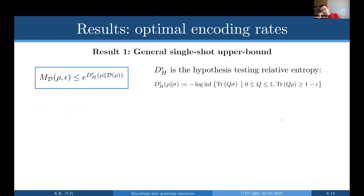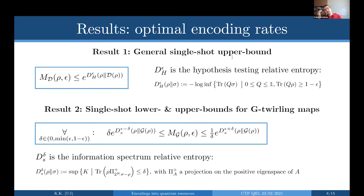The first result is a general single-shot upper bound. For any constraint described by a resource-destroying map D, any state rho, and any error epsilon, the number of messages is upper bounded by an expression involving the exponentiated hypothesis testing relative entropy between a state and a state with the resource removed. We can see this as a quantifier of a resource — a kind of distance between a state and a state with its resource removed.